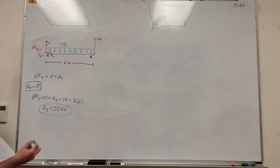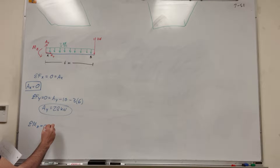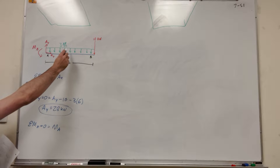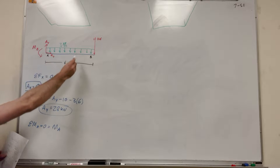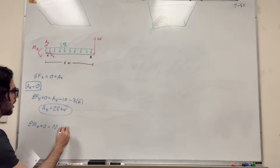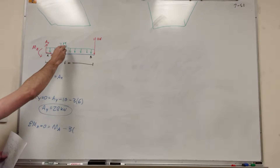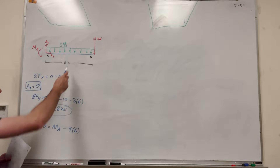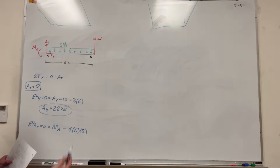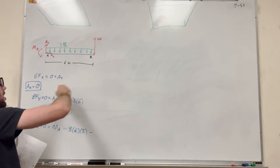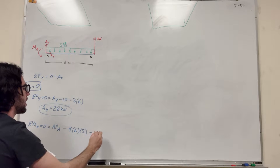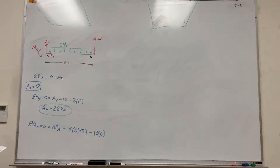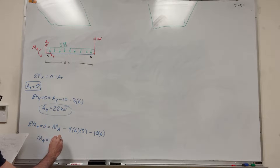If we're finding the moment at A, we're going to take the sum of the moments at A equal to zero. We have moment A drawn going counterclockwise, so we're going to add moment of A. The 3 kilonewtons per meter are going to push down, so we need to find the total force first — that's 3 kilonewtons per meter times 6 meters — and that pushes clockwise, so we subtract it: 3 kilonewtons per meter times 6 meters, acting at its center, which is at 3 meters. We also have this 10 kilonewton load pushing clockwise, so we subtract that too: minus 10 times its distance of 6 meters. Doing the math, moment of A is equal to 114 kilonewton-meters.